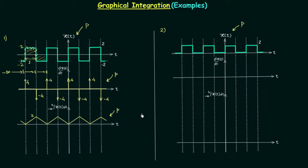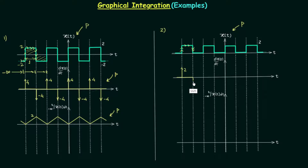Now let's perform the same steps for problem number 2. For this waveform, we find d/dt of xt: initially the slope is 0, then we have a discontinuity of magnitude 2 giving an impulse with weight 2. After this the slope is 0 again, then another discontinuity gives an impulse with weight minus 2. Completing the waveform in the same manner, we can say the differentiation is periodic in nature.